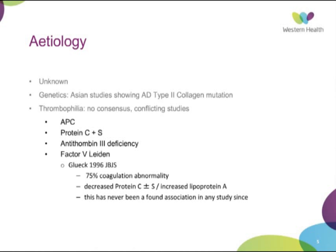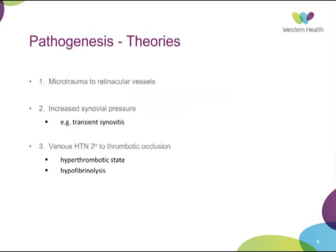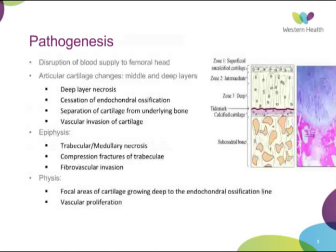The pathogenesis of Perthes has three major postulated causes: first, microtraumatic retinacular vessel injury causing ischemia; second, increased synovial pressure; third, venous hypertension secondary to thrombotic occlusion — this is where the thrombophilia theories come in. The primary pathogenesis is one of avascularity, with disruption of blood supply to the femoral head.